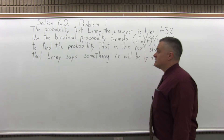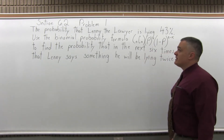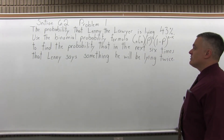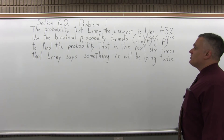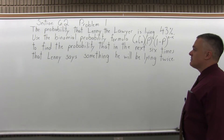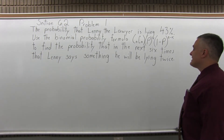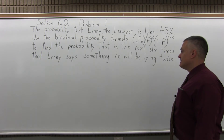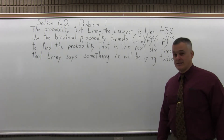The problem states: the probability that Lenny the Lawyer is lying is 43%. Use the binomial probability formula — n combination x, times p to the x, times 1 minus p to the n minus x — to find the probability that in the next 6 times that Lenny says something, he'll be lying twice.